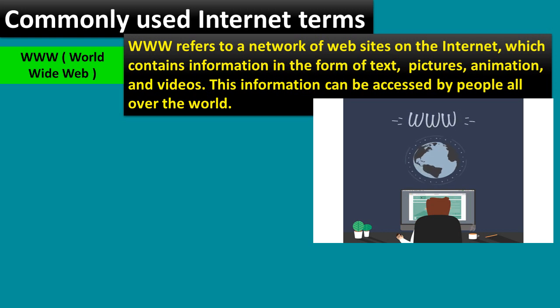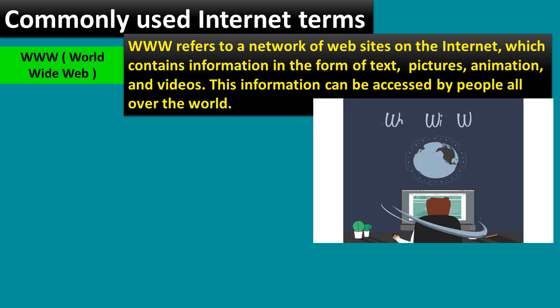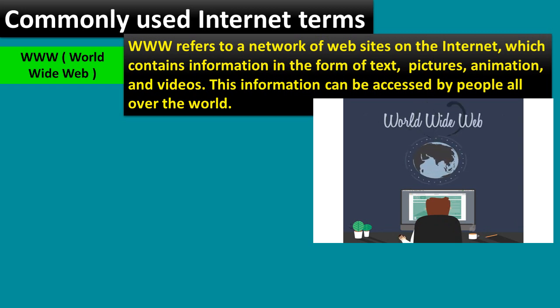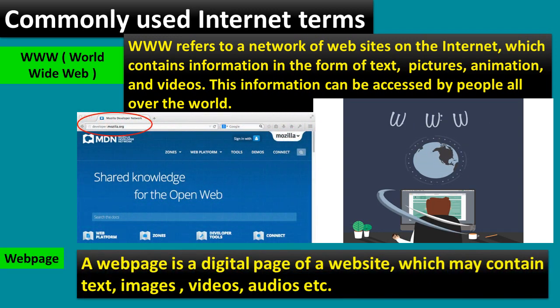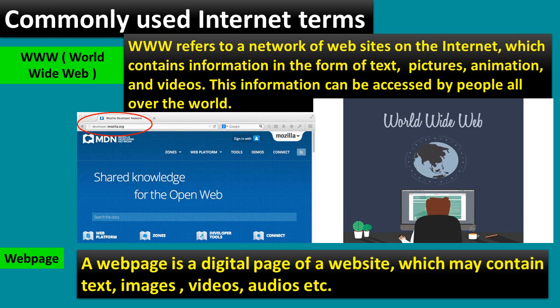Now let us learn the commonly used internet terms. WWW — World Wide Web: WWW refers to a network of websites on the internet which contains information in the form of text, pictures, animation, and videos. This information can be accessed by people all over the world. Web page: a web page is a digital page of a website which may contain text, images, videos, audios, etc.